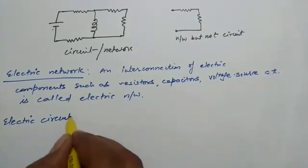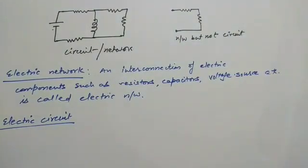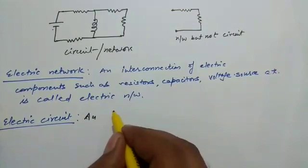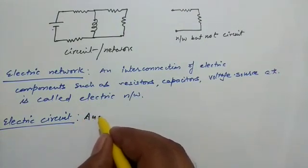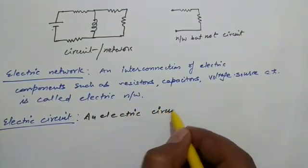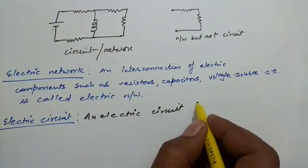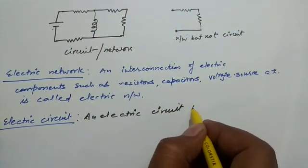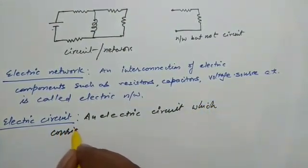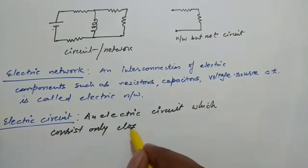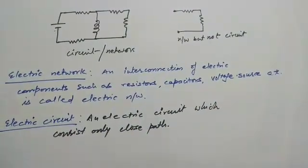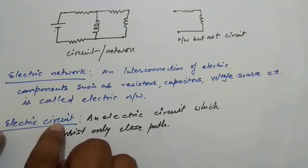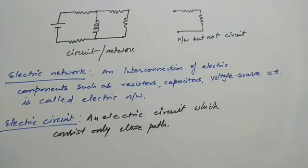In the case of an electric circuit, it is an electrical network which consists only of closed paths. So in general, the difference between network and circuit is just that a circuit has only closed paths, while a network may or may not consist of closed paths. Thank you for watching.